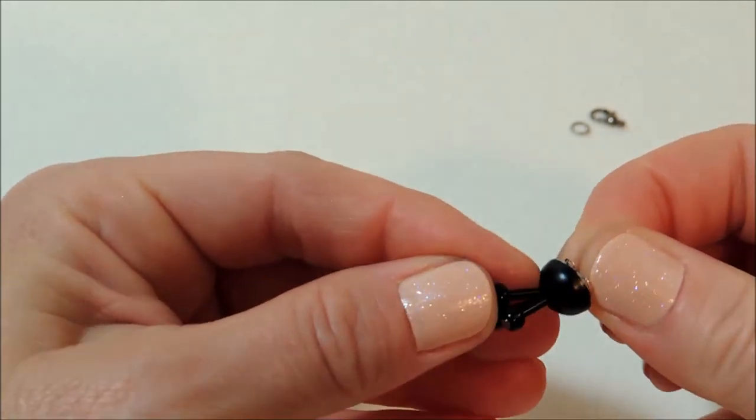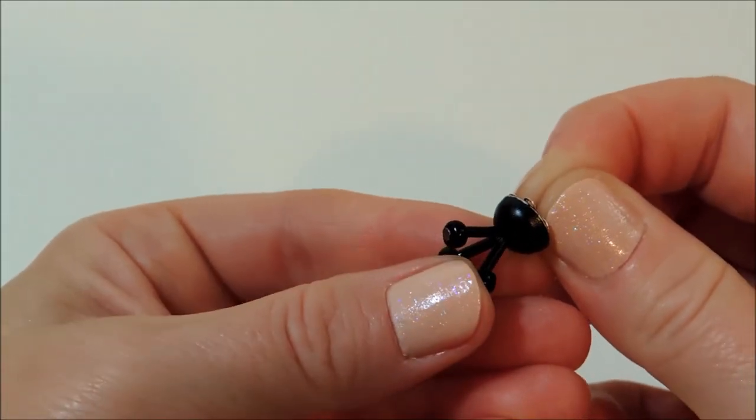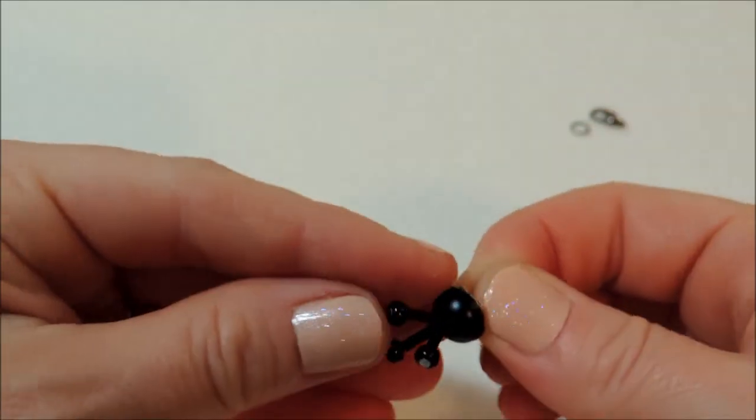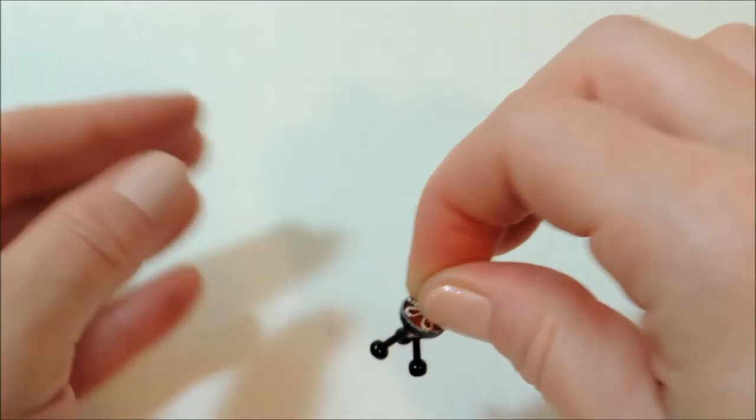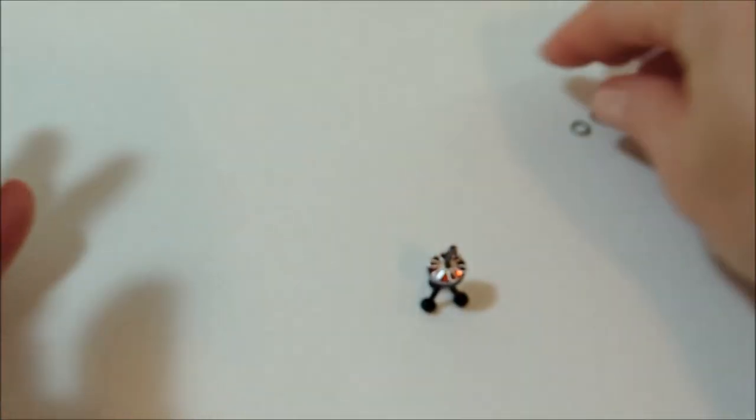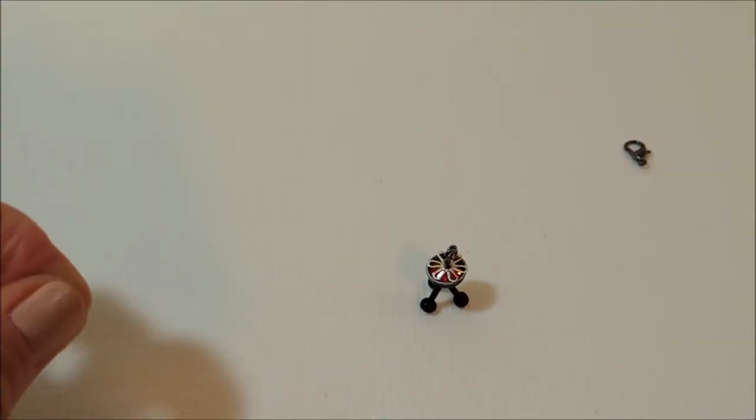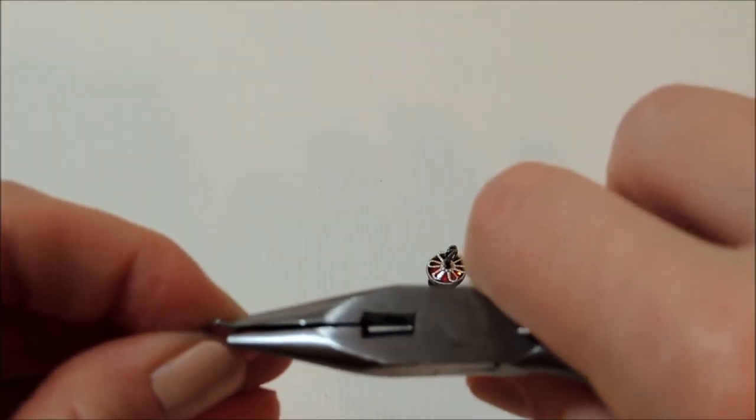So now at this point, kind of adjust those legs the way that you want them, make sure that we've got those even, and then we can add on our jump ring and our lobster clasp.